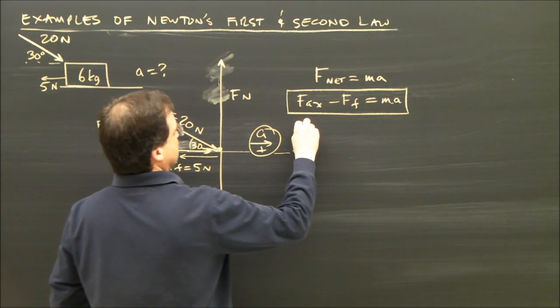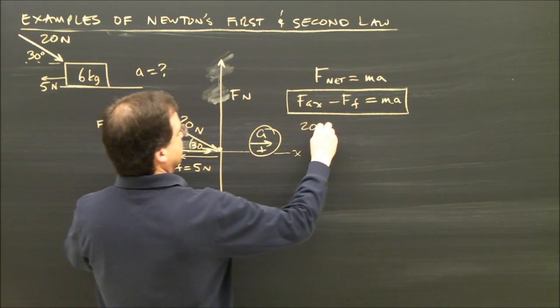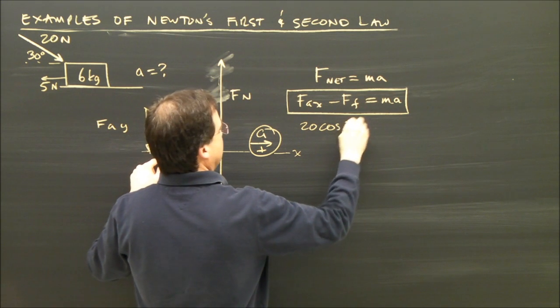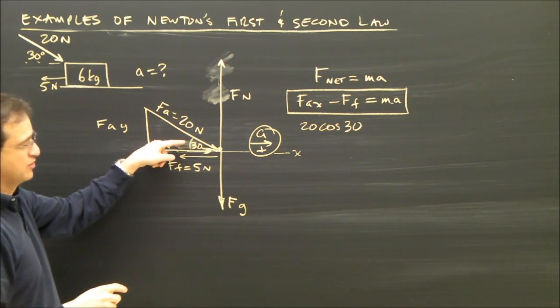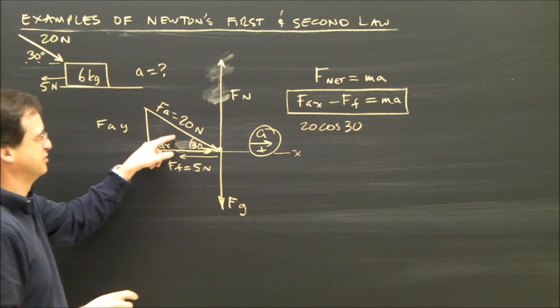So Fax is 20 cosine 30 because there's the 20, there's angle 30, it's the adjacent side, it's the cosine side.